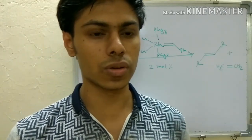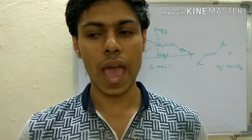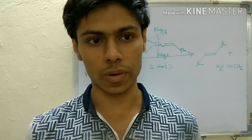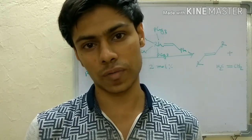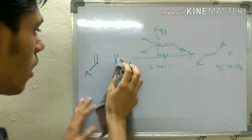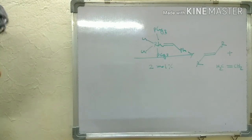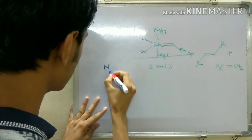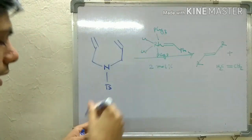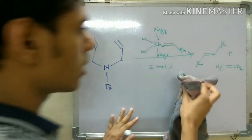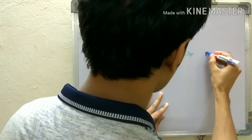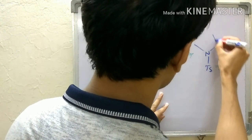Almost every year, or alternate year, one question will be there from this metathesis topic — it is very important for competitive exams. Last year there was no question from metathesis, so this June NET exam a question from this topic is very likely. The question frequently given in the CSIR exam provides a compound with this catalyst, and in this case, cyclization will occur and you will get this cyclic product. In all cases, ethylene gas is liberated.